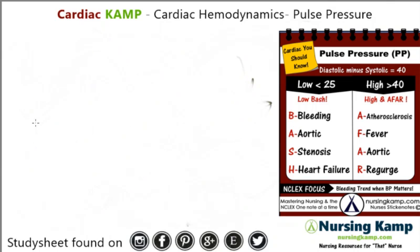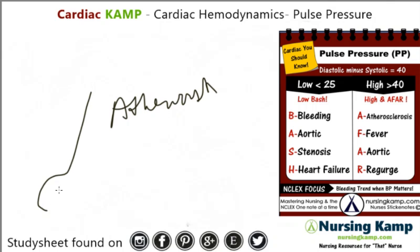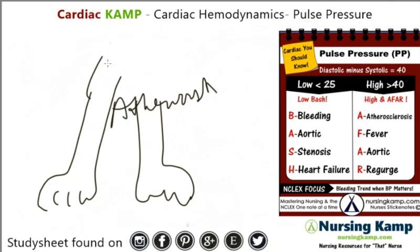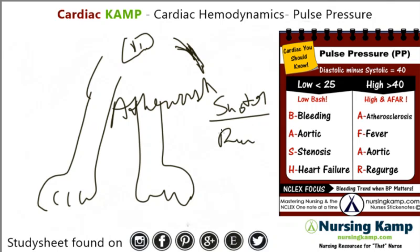High pulse pressure is greater than 40. Atherosclerosis is the main cause. When you look at peripheral vascular disease and atherosclerosis, the coronary arteries are narrowed and blood has difficulty flowing through them, causing a widening of the pressure — the difference between systolic and diastolic increases.